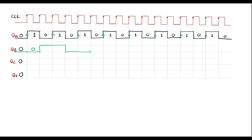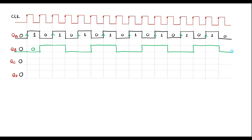QB goes high for the next 2 clock pulses, then low for 2, then high for 2, then 0. So the pattern is: 0, 0, 1, 1, 0, 0, 1, 1, 0, 0, 1, 1, 0, 0, 1, 1, and back to 0. This completes the QB waveform.